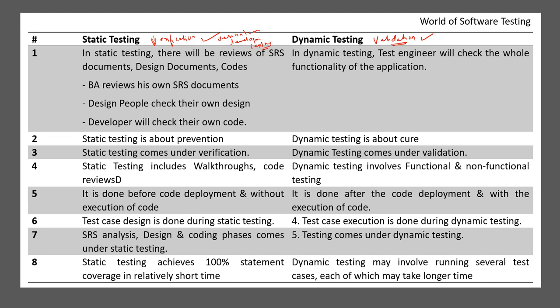The BA will review the SRS documents, the design team will check their own design documents, and the developer will check their own code with the help of unit testing. In dynamic testing, the test engineer checks the whole functionality of the application, executing all scenarios and test cases on the complete application. This is the first difference between static and dynamic testing.